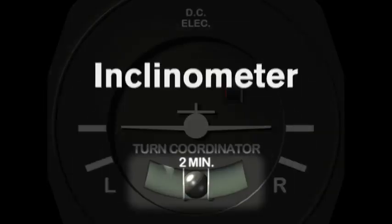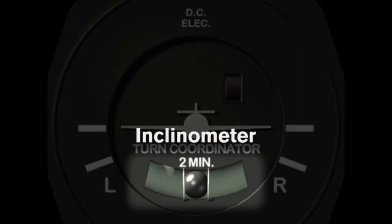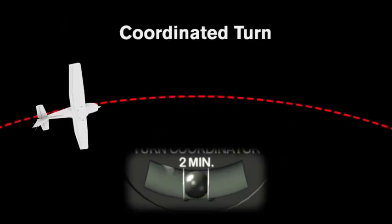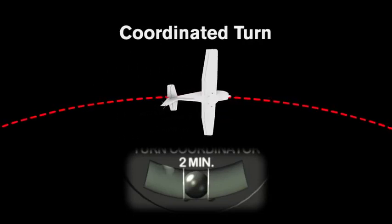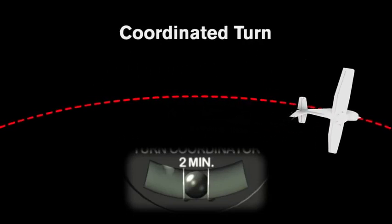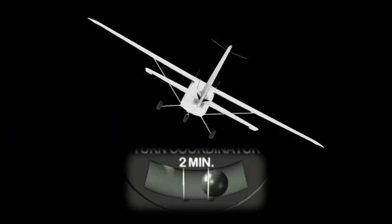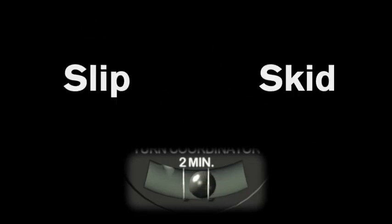Below the miniature aircraft is an inclinometer, which incorporates a ball inside a tube filled with kerosene. The ball can freely move left and right and will travel in whatever direction aerodynamic forces push and pull it. Ideally, the ball should always be centered, which means the aircraft is coordinated. If aerodynamic forces are unbalanced, the ball will slide left or right. This happens when there is either too much or too little rudder being used with the current amount of bank. These two conditions are referred to as a slip and a skid.